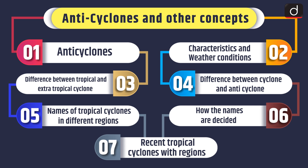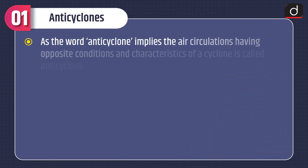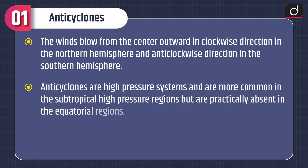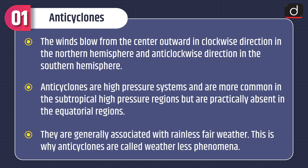Let's begin with the definition of anticyclones. As the word anticyclone implies, air circulations having opposite conditions and characteristics of a cyclone are called anticyclones. The term anticyclone, to indicate divergent air circulation in all directions from a high pressure center, was first introduced by F. Galton in the year 1861. Surrounded by almost circular isobars, an anticyclone is a wind system which has the highest pressure at the center and pressure decreases outward.